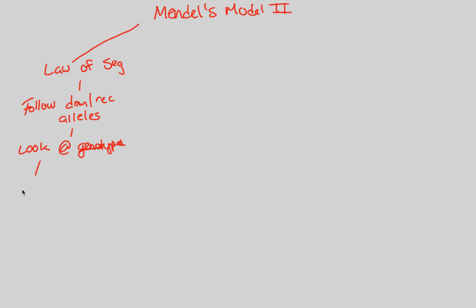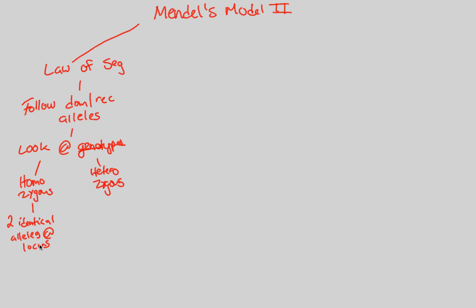Two different ways are through the terms homozygous and its opposite, heterozygous. Homozygous simply means two identical alleles at a locus. A locus is the location at which the genes are found, and alleles are alternate forms of genes. If they're identical and not alternate, they're 'homo' — meaning the same — 'zygous,' referring to the genes.